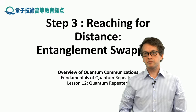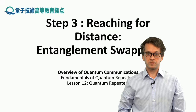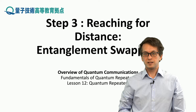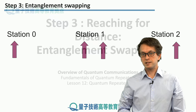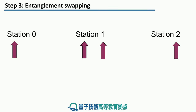Step 3: Reaching for distance, entanglement swapping. In the previous step we saw how to establish link-level entanglement. Here we will extend it to show how to establish long-distance end-to-end entanglement.